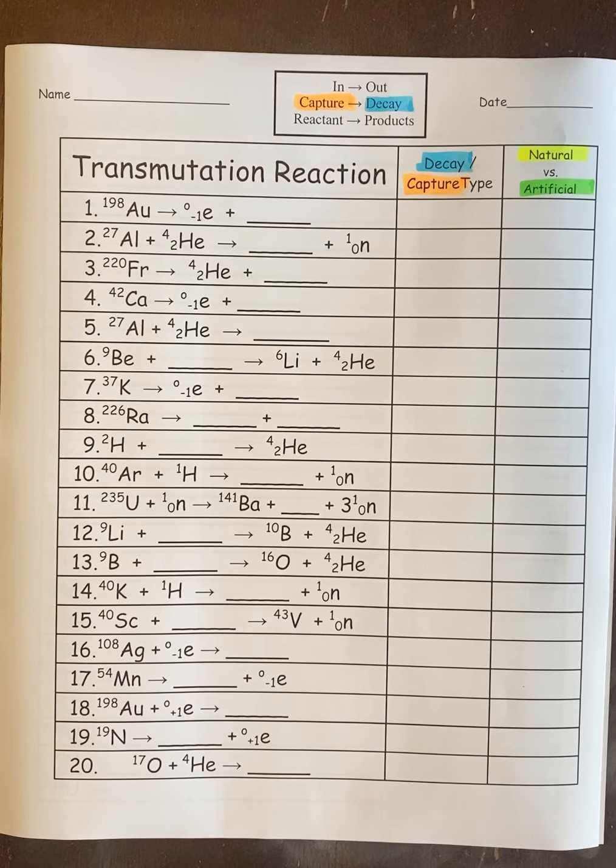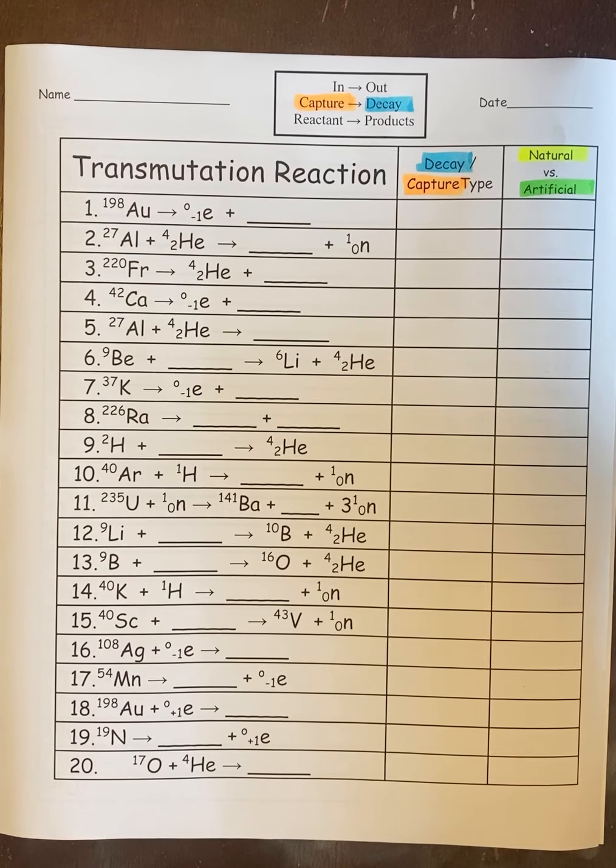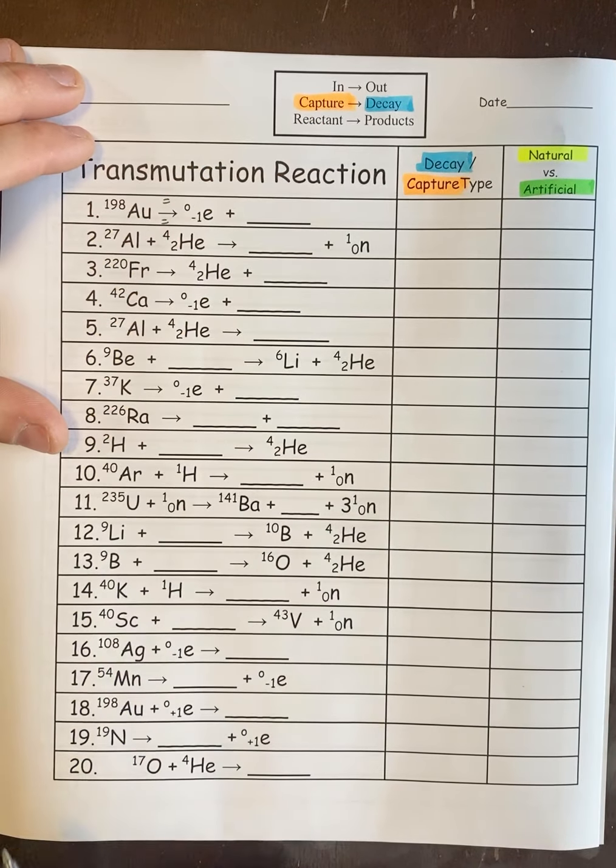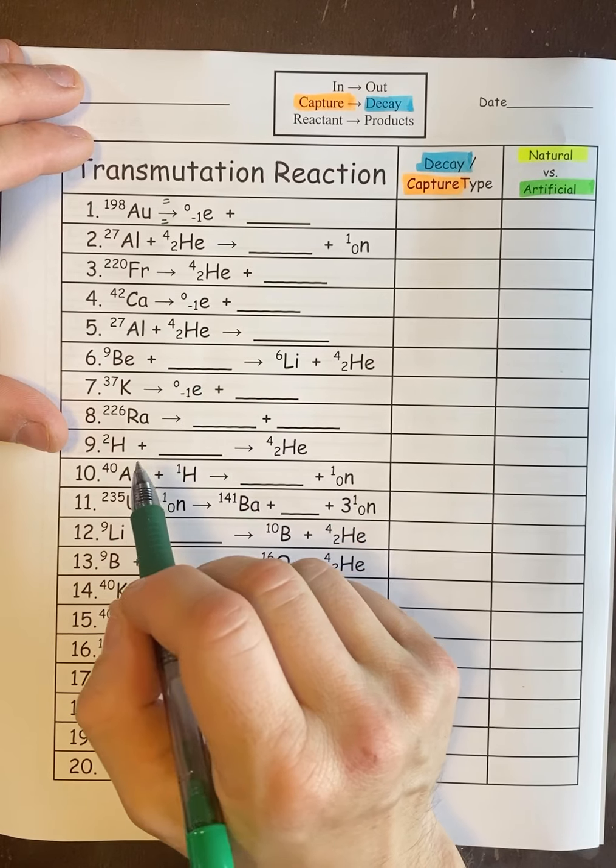Today we're going to be doing nuclear transmutation practice problems. I have the practice problems here on the left. You're basically going to be solving for the blank and then determining if it is a decay or capture and what type, and then determining if the overall reaction is a natural or artificial transmutation. Let's start with the basics. First we're going to solve for the blank. The first thing you do is understand the arrow is your equal sign. We've got two sets of numbers, the top numbers and the bottom numbers.